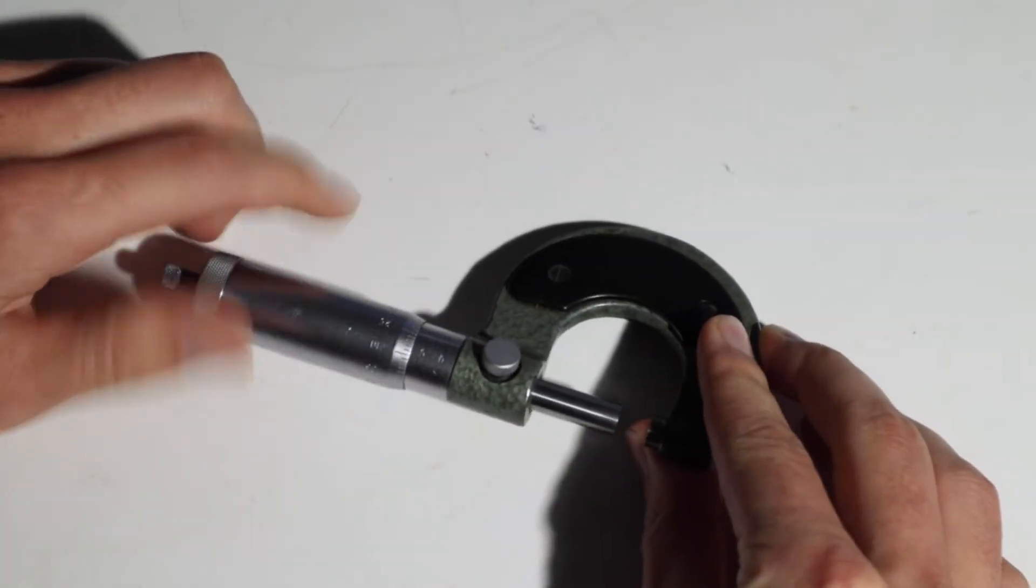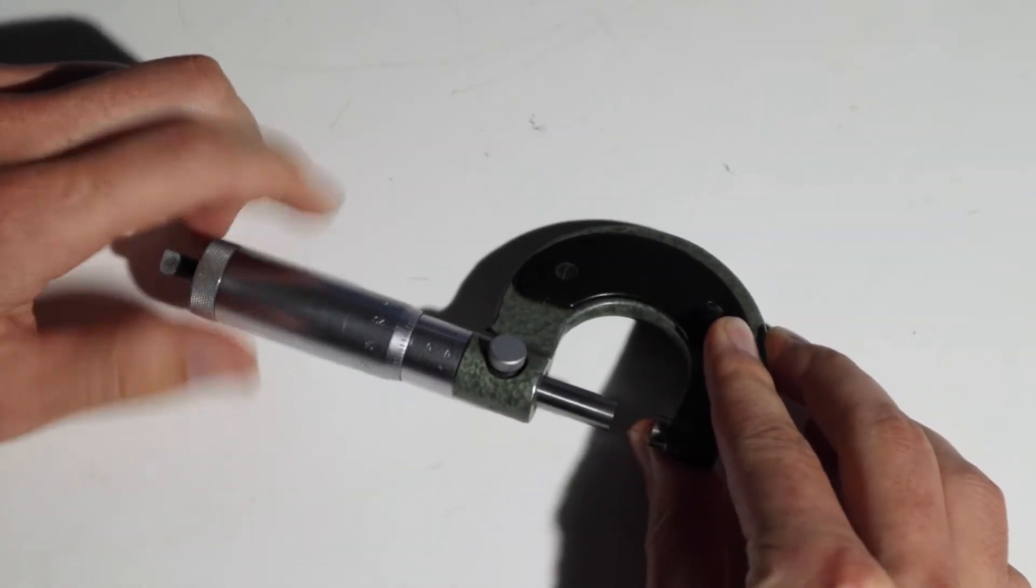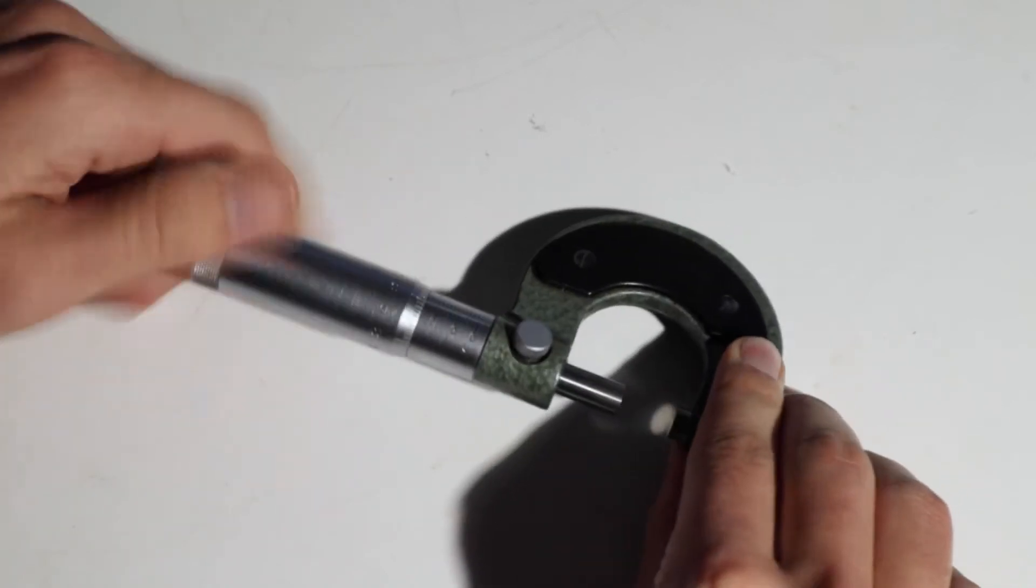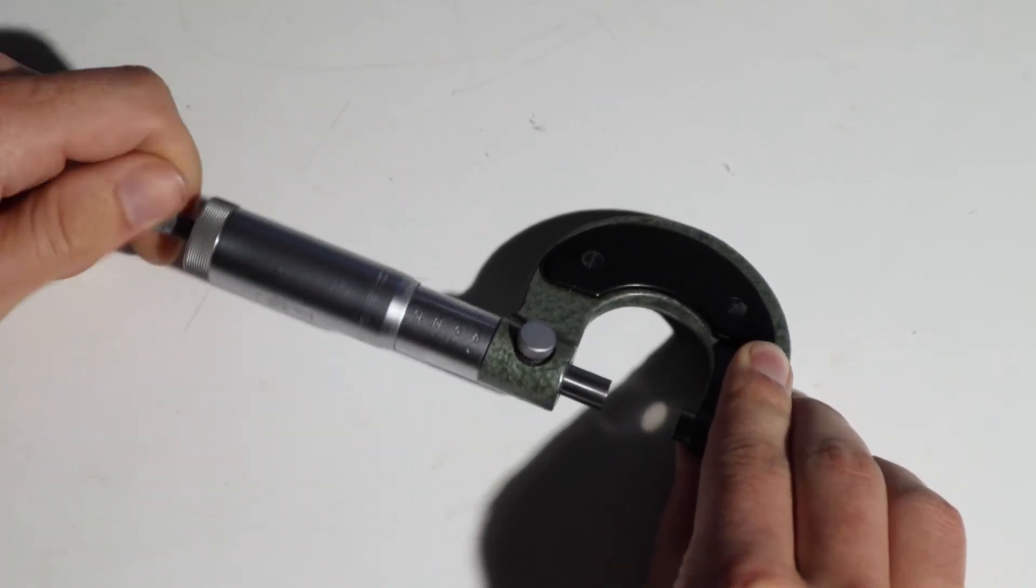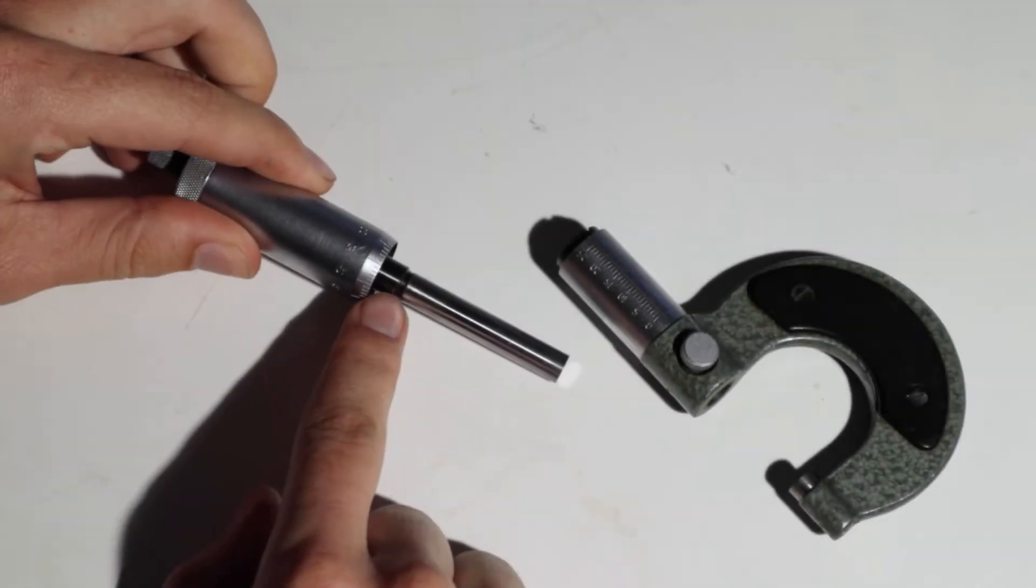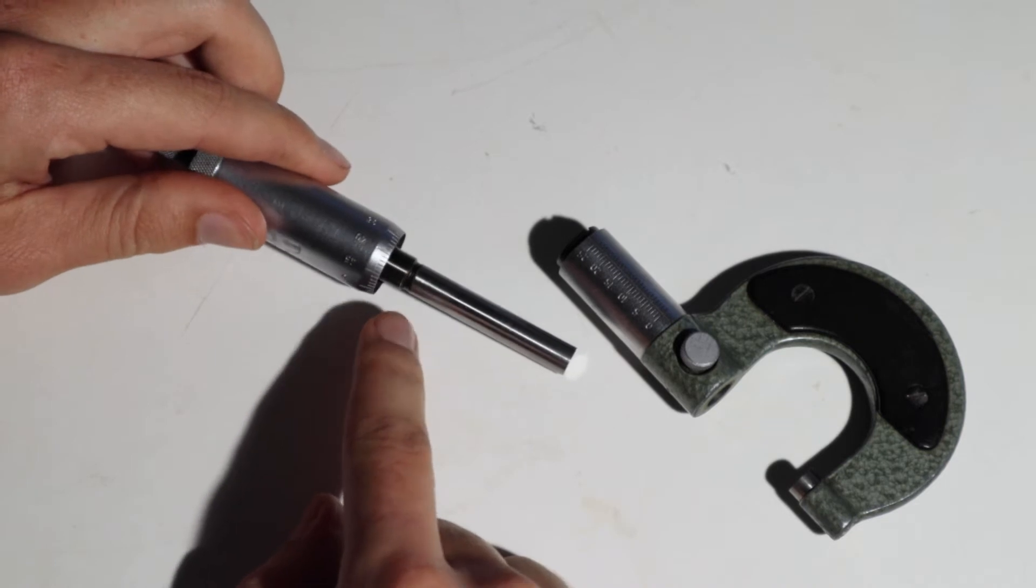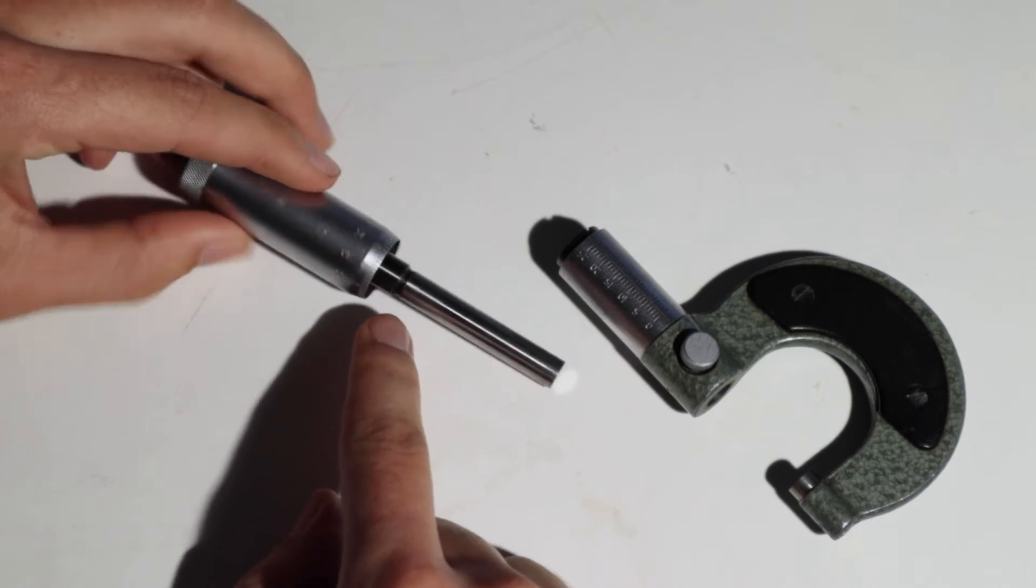If we screw the thimble all the way back we actually can take it apart and see our micrometric thread inside. You can see a micrometric thread here. This is a crucial part of the device and it's precisely ground fine thread.